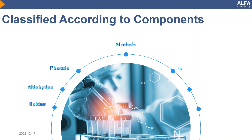Alkali and salts: The bactericidal mechanism involves denaturing, precipitating, or dissolving target proteins. Its sterilization is characterized by killing bacterial propagules, spores, viruses, and other resistant microorganisms. It is highly bactericidal and corrosive and consists of sodium hydroxide, calcium oxide, salt, non-corrosive, etc. Generally, it can only be used as a preventive disinfectant and sterilizing detergent.